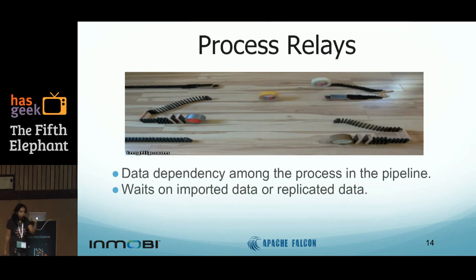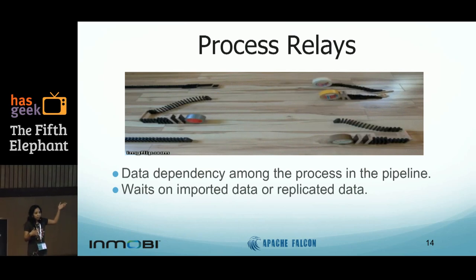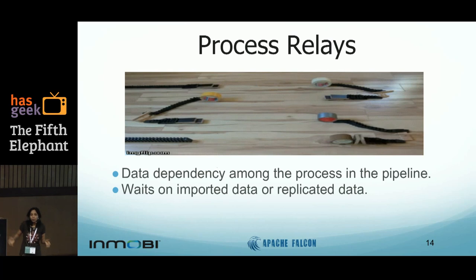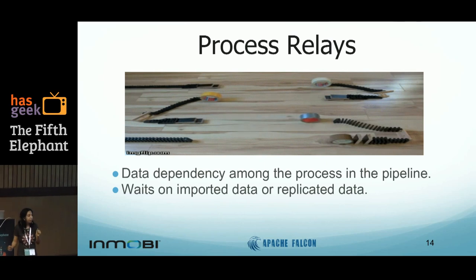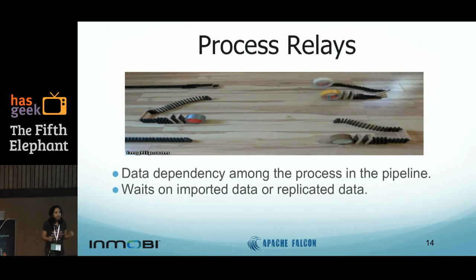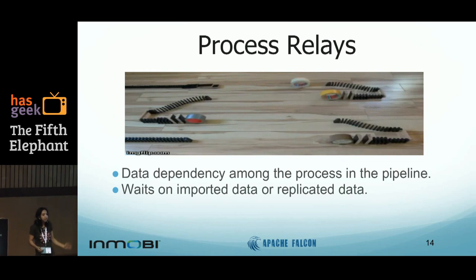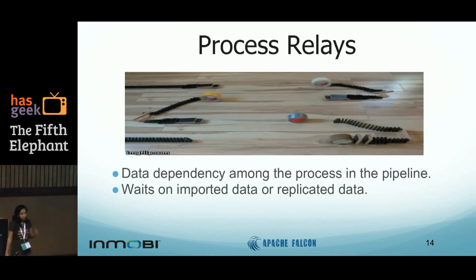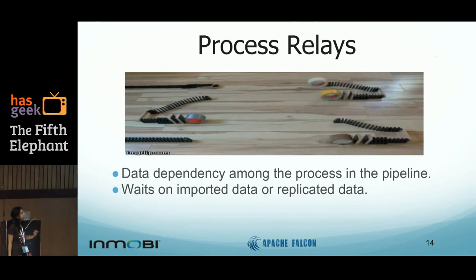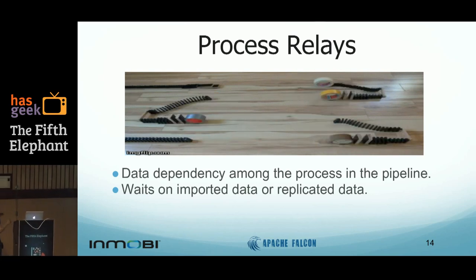Process management. When you build a process, more often than not there is a data dependency — you process something, you produce an output, and there are one or more consumers for that output. They will have to wait for that data to arrive before they start processing. This is what we mean by process relays: there is a dependency DAG of all these processes, and when data is produced something else triggers, which produces more data, which triggers a third process. Processes may need to wait for either imported data or even replicated data.